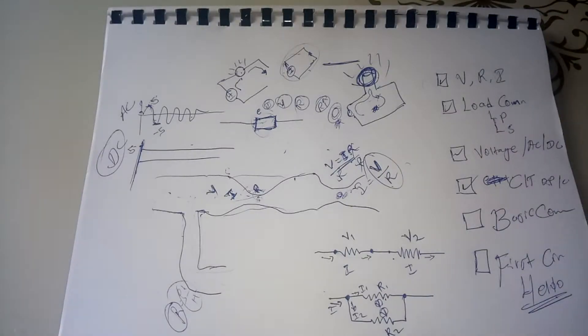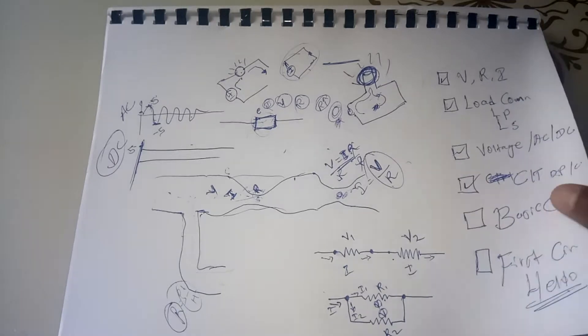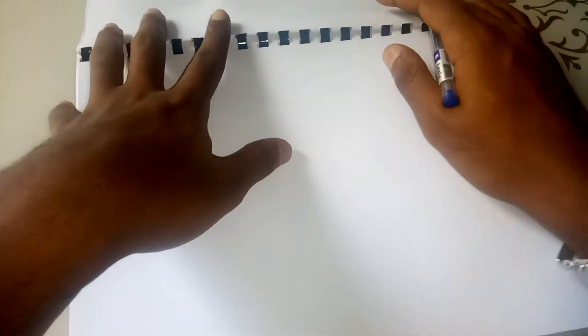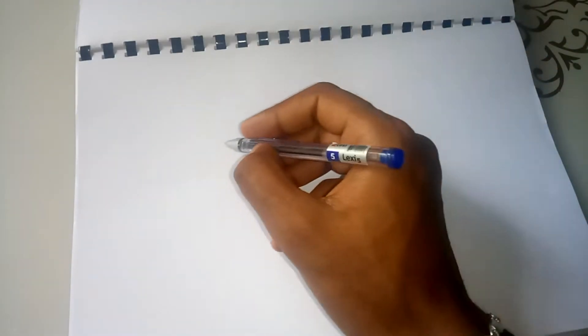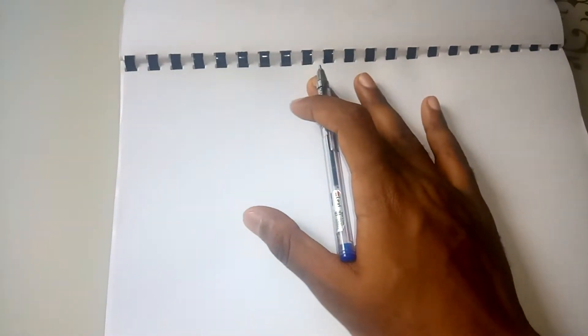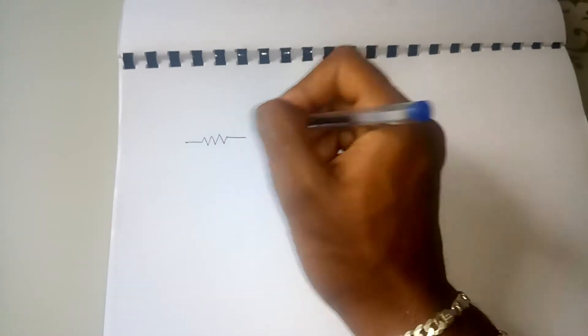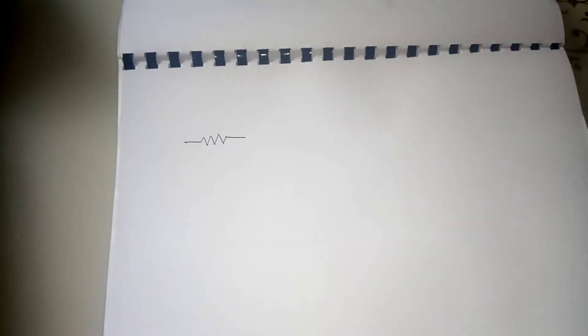This is the basic component. Now we are going to show you the basic components. What is the basic component? The resistor. The resistor is a component that can control current.